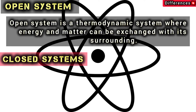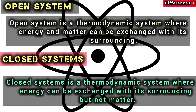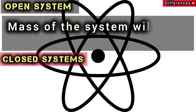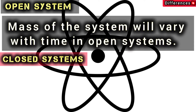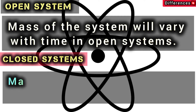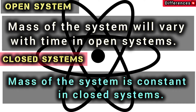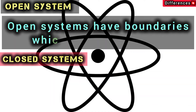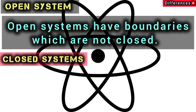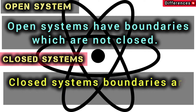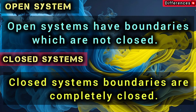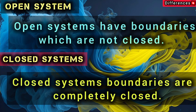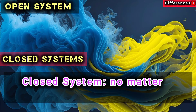A closed system is a thermodynamic system where energy can be exchanged with its surroundings, but not matter. Mass of the system will vary with time in open systems, while mass of the system is constant in closed systems. Open systems have boundaries which are not closed, while closed systems have boundaries that are completely closed.